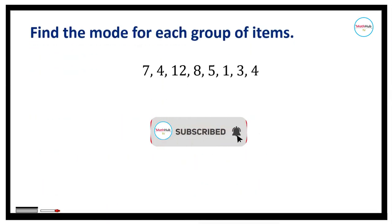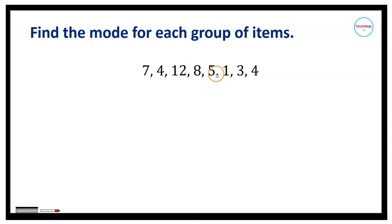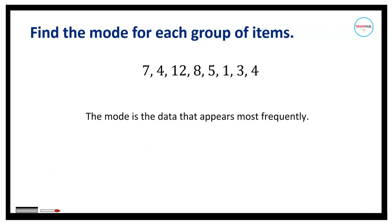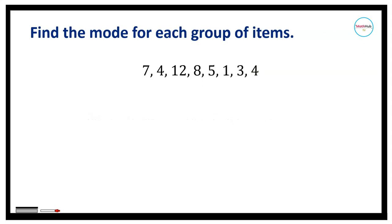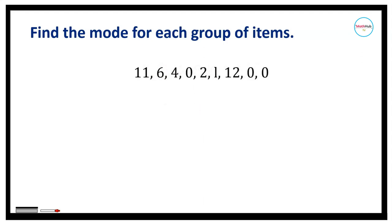Look for the mode for each group of data items if it exists. For the first example, we are given: 7, 4, 12, 8, 5, 1, 3, 4. The mode is defined to be the number which appears most often in a set of numbers. In this given set, 4 appears twice while the rest of the numbers only appear once. Therefore, the mode is equal to 4.